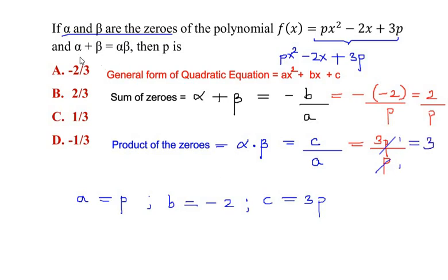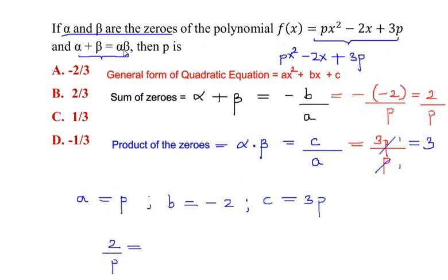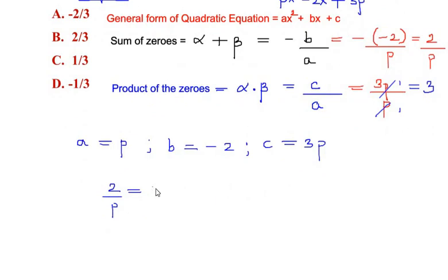Now according to the given expression, the sum of the zeros equals the product of the zeros. So 2/p = 3. By cross multiplication, p goes to the place of 3, giving us p = 2/3. So this is the value of p. Let us check if it is in the options. Yes, it is option B.